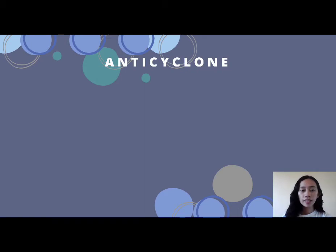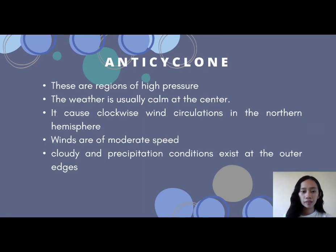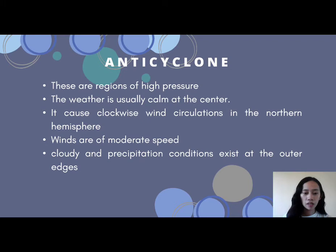Another weather system is anti-cyclones. These are regions of high pressure, unlike cyclones which are regions of low pressure. The weather is usually calm at the center. Anti-cyclones cause clockwise wind circulations in the northern hemisphere, which is different from the counterclockwise direction of extra-tropical cyclones. In anti-cyclones, winds are of moderate speed, and clouds and precipitation conditions exist at the outer edges.